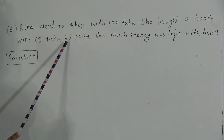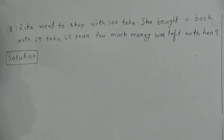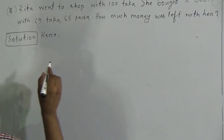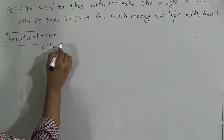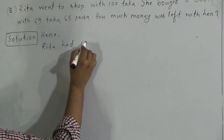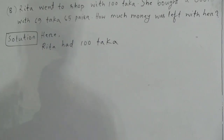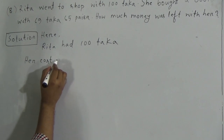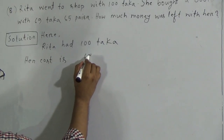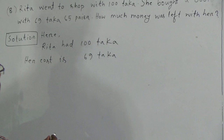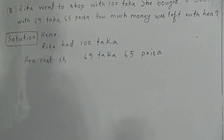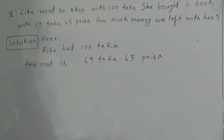So, if we subtract 69 Taka 65 Paisa from 100 Taka, then we can get the answer. Rita had 100 Taka and her cost is 69 Taka 65 Paisa. For subtracting 69 Taka 65 Paisa from 100 Taka, we will use rough work.